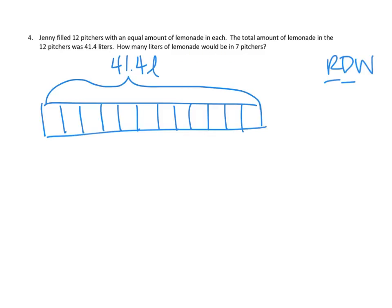The total amount of lemonade in the 12 pitchers was 41.4 liters. The total amount in the whole thing was 41.4 liters. And then the question was, how many liters of lemonade would be in seven pitchers? Oh my goodness. So, the question isn't how much is going to be in one. That's what I thought it was going to be. It's how many is in seven. So, I think that's seven. 1, 2, 3, 4, 5, 6, 7. So, our question is, how many are in seven?